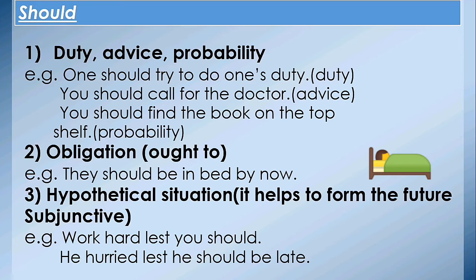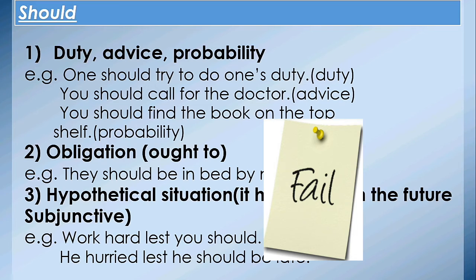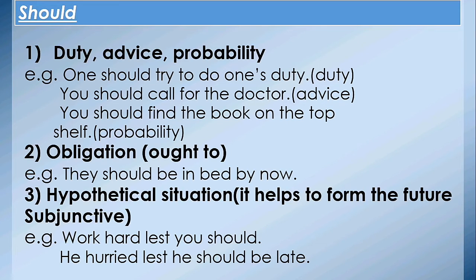Number three: hypothetical situation — it helps to form the future subjunctive. यह future की काल्पनिक situation बताने में use होता है। For example: 'Work hard lest you should fail.' — परिश्रम करो नहीं तो तुम fail हो जाओगे। 'He hurried lest he should be late.' — अगर वह जल्दी नहीं करता तो लेट हो जाता। 'Lest' के साथ always 'should' का यूज़ किया जाता है।